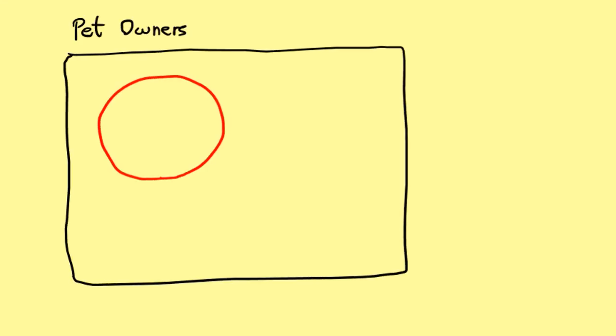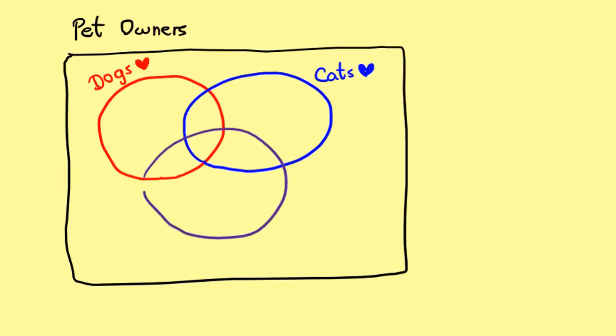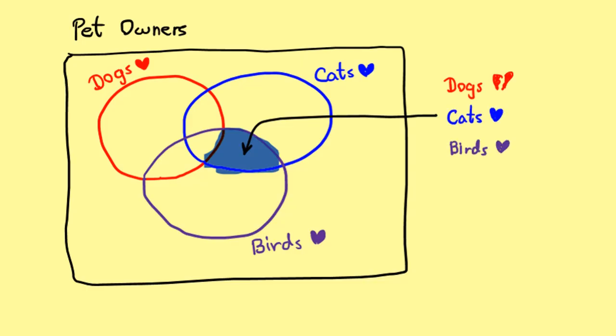We've known Venn diagrams or set diagrams since middle school. They help us see how sets intersect with each other. But have you ever tried to draw the Venn diagram for 4 sets?